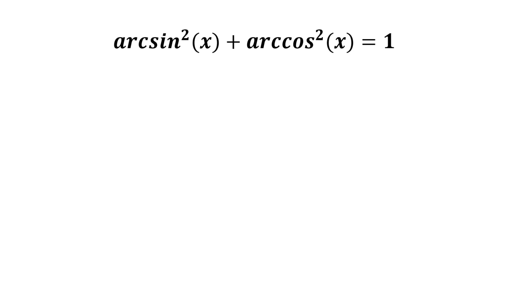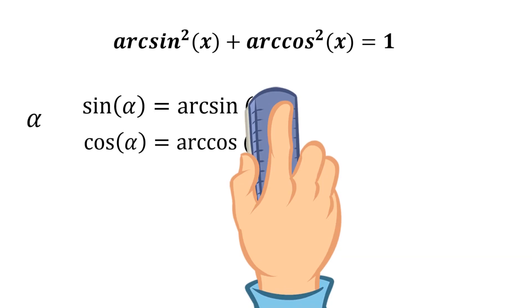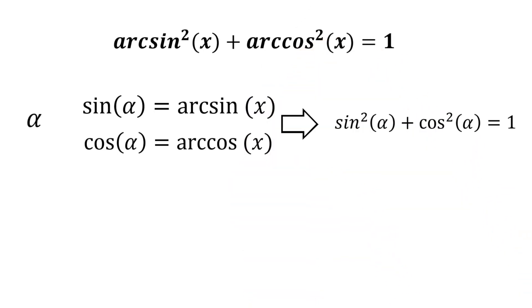there should be such angles, let's name them alpha, whose sine and cosine will give us the arc sine and arc cosine from the original identity. Also, we can notice that the original equation will turn into the basic trigonometric identity.